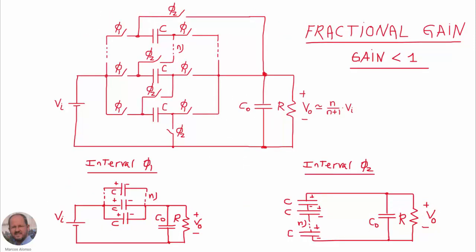This is the topology corresponding to the fractional gain switched capacitor converter. As usual we have several switches that operate during the phi1 interval and other switches operating during the phi2 interval. During interval phi1 we are supplying the load through all the capacitors in parallel, and during interval phi2 we are connecting all the capacitors in series and supplying the load.